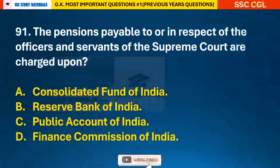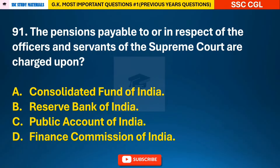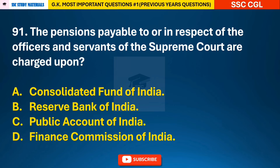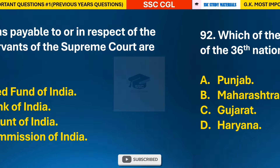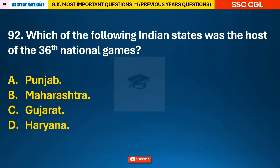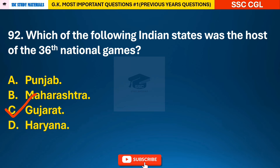Question 91: The pensions payable to or in respect of the officers and servants of the Supreme Court are charged upon — answer A: the Consolidated Fund of India. Question 92: Which of the following Indian states was the host of the 36th National Games? — answer C: the state of Gujarat.